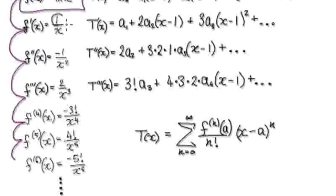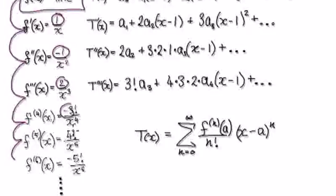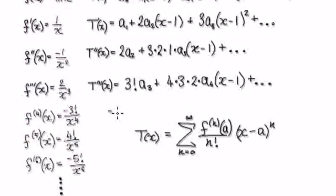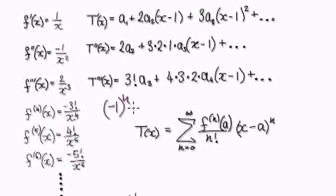If you look at this, you've got positive 1, negative 1, positive, negative, positive, negative, and so on. So you know you're going to get that alternating sign pattern somewhere in the general case.